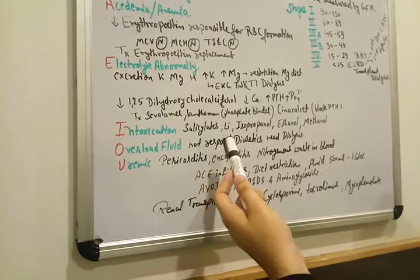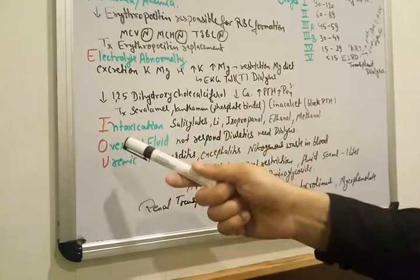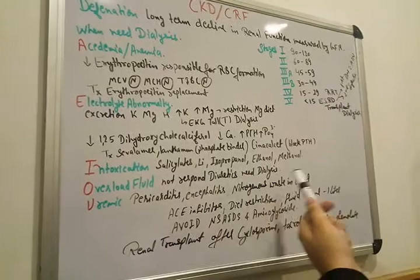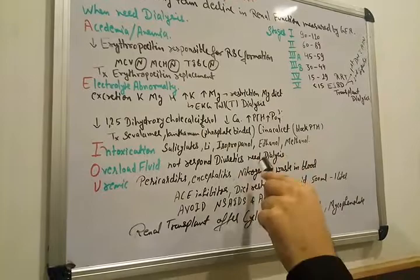And sometimes there is overload of fluid. We need to do dialysis also here in this stage when there is not response with diuretics. Diuretics work to remove the excess fluid of our body and if the diuretics are failed, we need to do dialysis here.